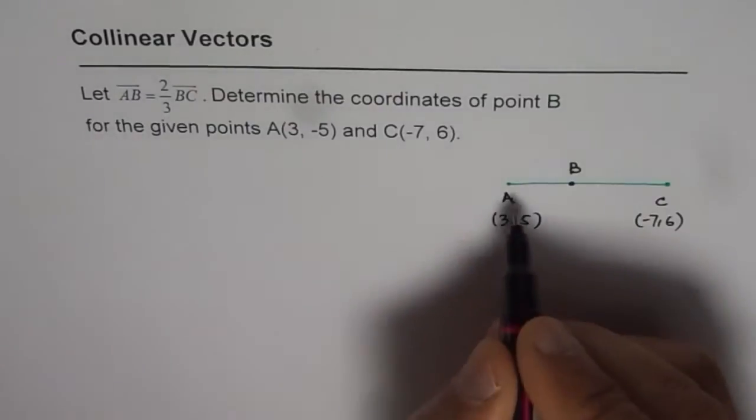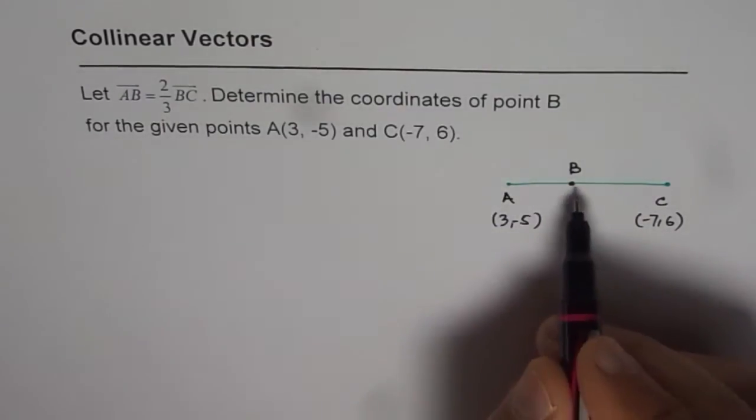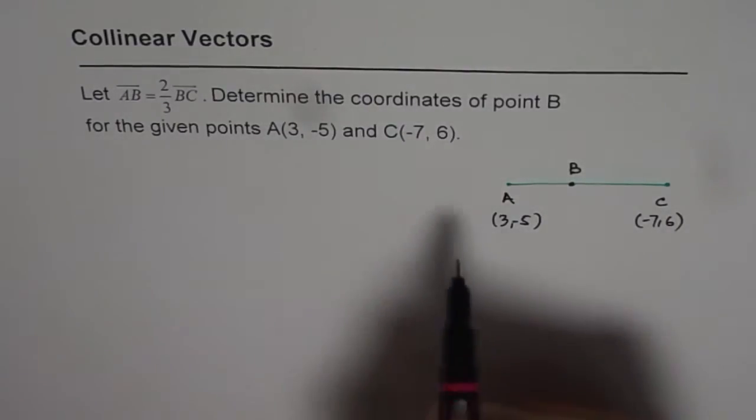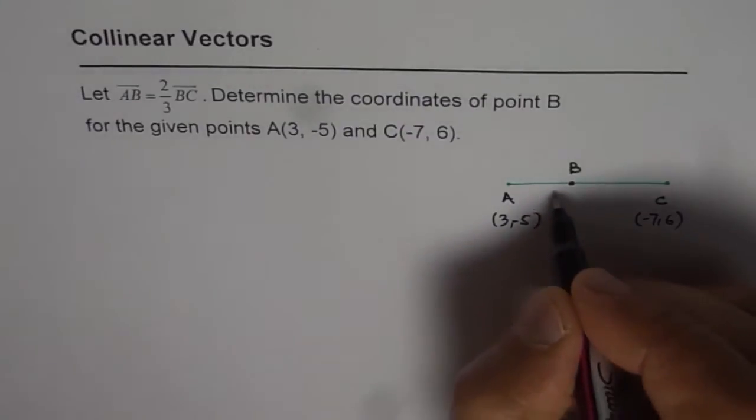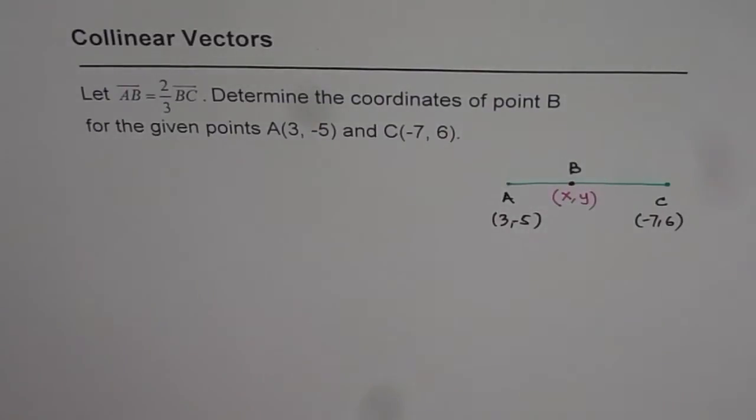So A to B is 2 thirds of B to C. That is what it is. So that is how we have to figure out, and we need to find the coordinates of point B. Let us say B coordinates are X and Y, and then we will solve for it.